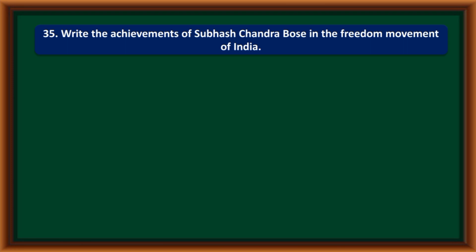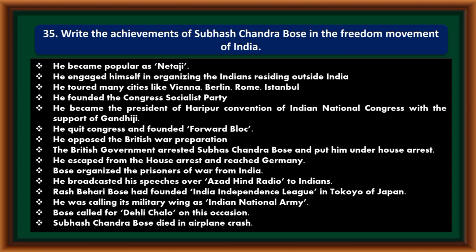Write the achievements of Subhash Chandra Bose in the freedom movement of India. He became popular as Netaji. He encouraged organizing Indians residing outside India and toured cities like Vienna, Berlin, Rome, and Istanbul. He founded the Congress Socialist Party. He became president of the Haripura convention of the Indian National Congress with the support of Gandhiji. He then quit Congress and founded the Forward Bloc. He opposed British war preparations; the British arrested him and put him under house arrest. He escaped and reached Germany, organized prisoners of war from India, and broadcast speeches on Azad Hind Radio. Ras Bihari Bose had founded the Indian Independence League in Tokyo; its military wing was the Indian National Army. Bose called for 'Delhi Chalo.' He died in an aeroplane crash.